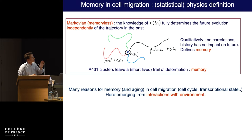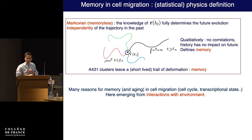In the remaining time, I want to switch to a second example where this type of memory will be much more long-lived and will have drastic consequences on the large-scale exploration of my cluster. As a disclaimer: when talking about memory in living systems, you have many reasons for memory — cell cycle, transcriptional state, aging effects depending on observation time. That's perfectly fine. I'm arguing that you can also have similar effects purely through interaction with the environment, and that's my point today.